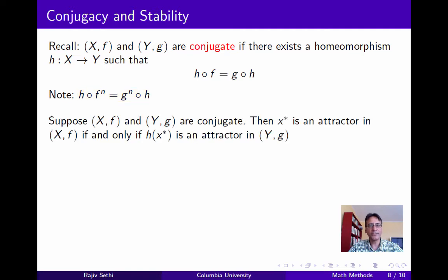Now here's a claim that we made earlier without proof, and we'll briefly go over the proof now. Suppose (x, f) and (y, g) are conjugate. Then the point x-star is an attractor in the first system if and only if h(x-star) is an attractor in the second system.